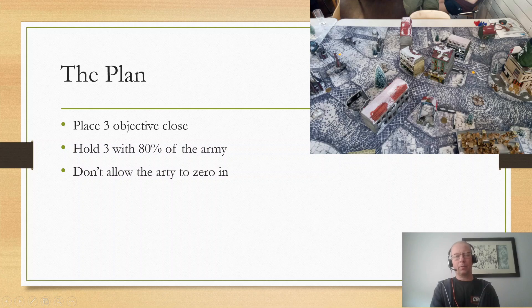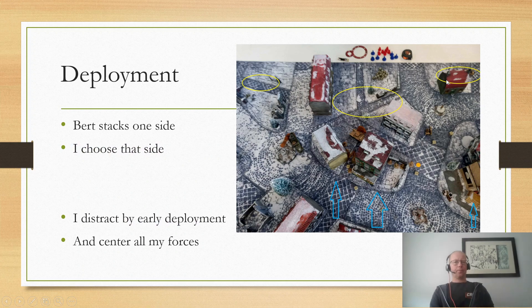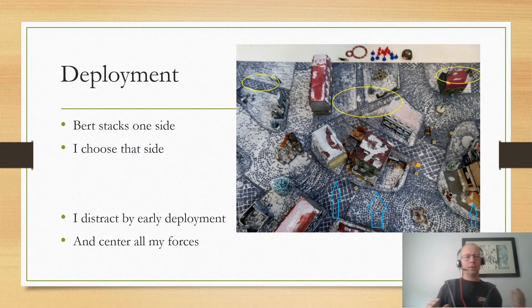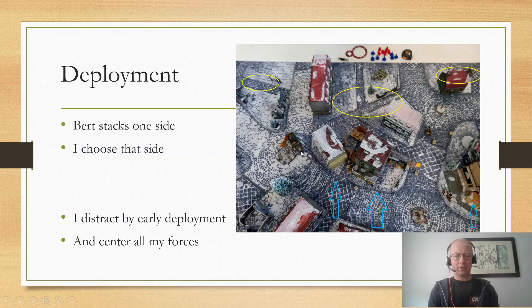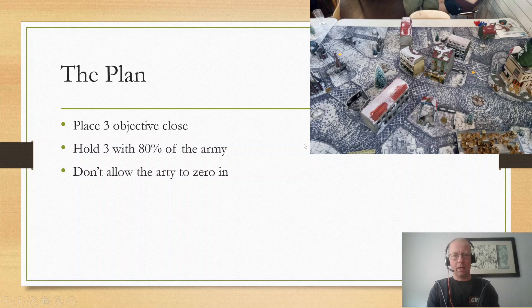You can actually see all of Bert's deployment zone in this image. Bert stacks up one side, I choose that side of course. Then we start deployment, and I start distracting him. I start by deploying my stuff way out on this flank. There was a ruin way out on this flank, and I start by setting up something over there.